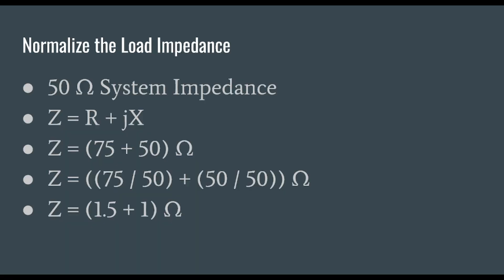When we go to plot our impedance we need to normalize our impedance. We have a 50 ohm system impedance because we're amateur radio operators. We need to know our formula Z equals R plus jX. In this case our complex impedance is equal to 75 ohms of real resistance plus 50 ohms of inductive reactance.